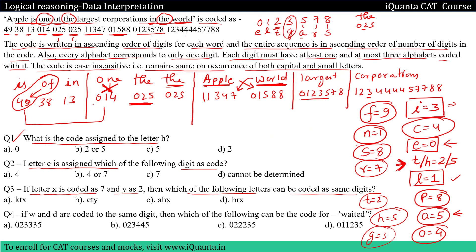The word 'world' is still remaining. World will be 11347. R is 7 — this will be R. O is 4 — this will be O. We have one L and L is given to 1, so one of the 1s will be L. Now two letters remain: W and D. They can be assigned to any of 1 or 3. So W can be 1 or 3, and D can be 1 or 3 — we are not sure.